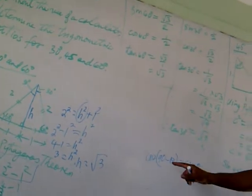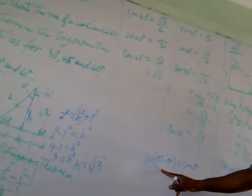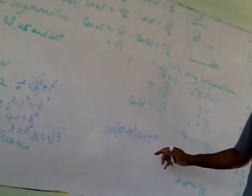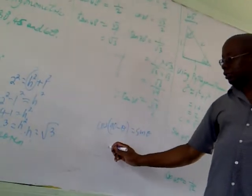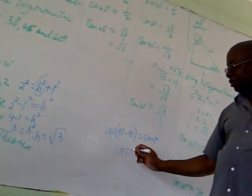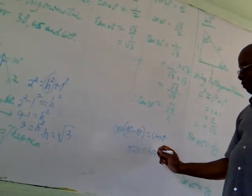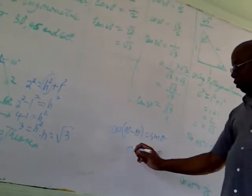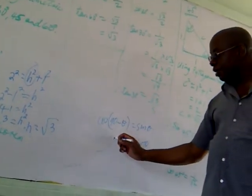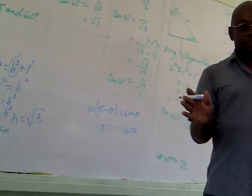So you can write it down in the notes. If this is 20, then the sine of 70 and the cosine of 20 is the same as the sine of 70, once both of them add up to 90 degrees.